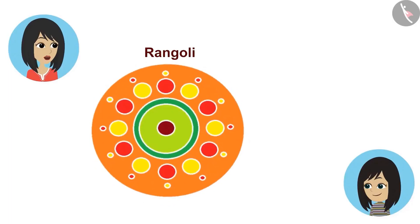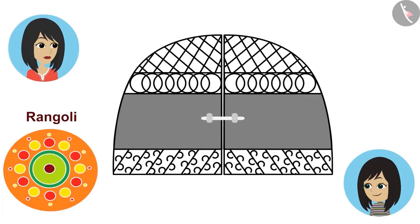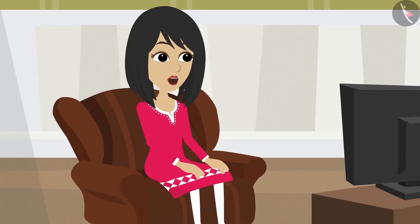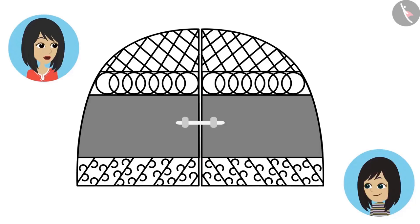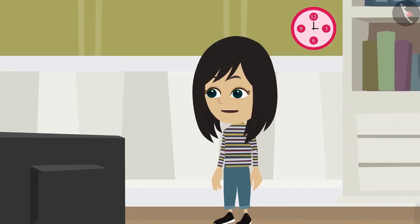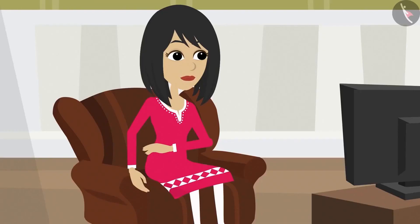In the design of the rangoli, circles are not overlapping each other. But in the design on the gate, the circles are overlapping each other. So can you create designs like this too? Yes. There is one more thing to note — more shapes have been used in the design of the gate along with the circles. So does this mean that circles can be part of a design that is not a circle? Yes.